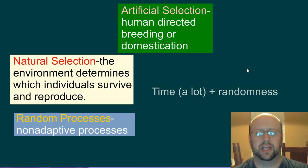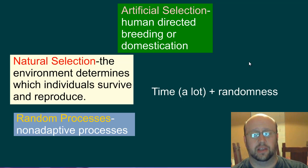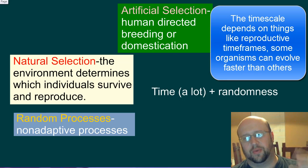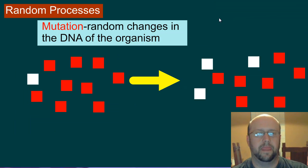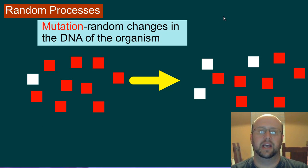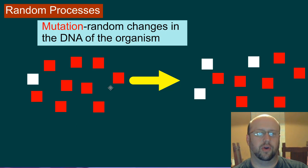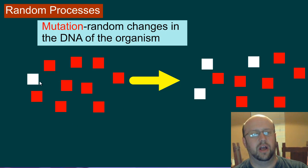Essentially, this all boils down to requiring a lot of time and some randomness to occur. There are really three pathways that randomness can affect the overall genotype of a population — remember, we're talking about a population of organisms. The first one is mutations. Let's assume that these organisms were all red at one point, and then there was a mutation in the DNA that actually caused one of the blocks to be white.